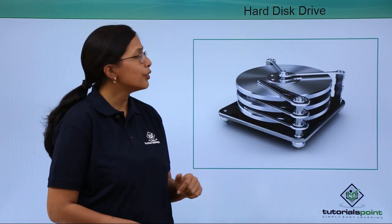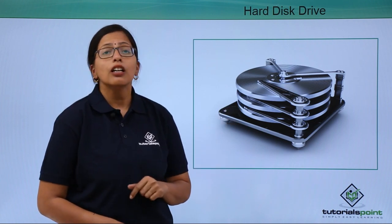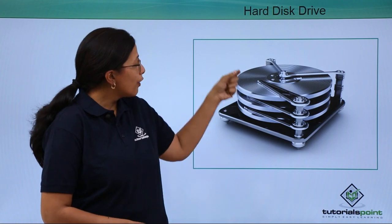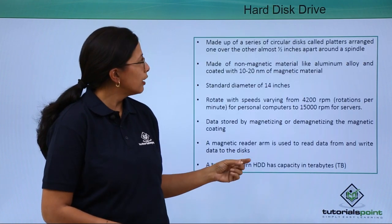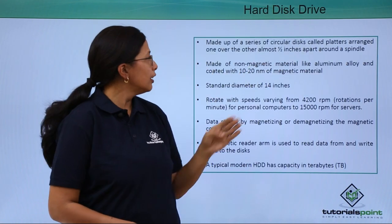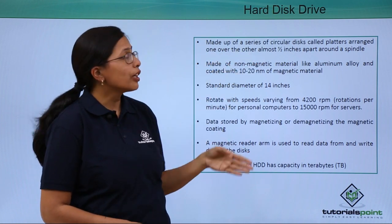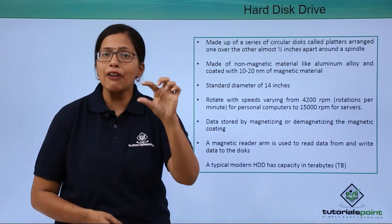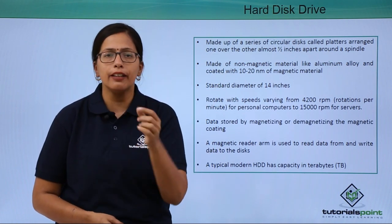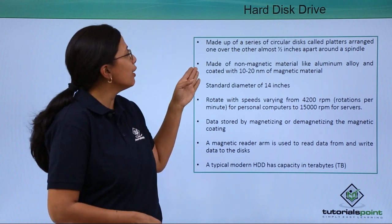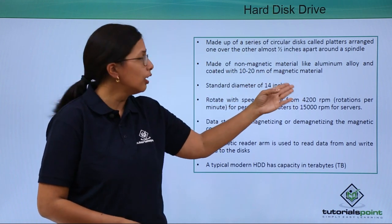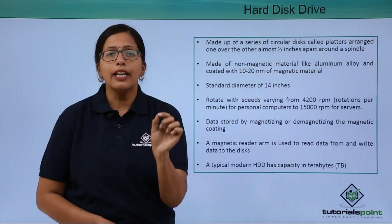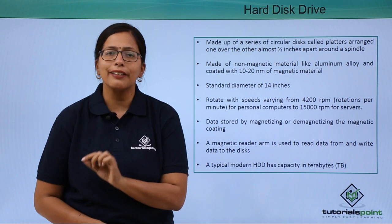This is a hard disk drive, as you can see. A hard disk drive is made of circular magnetic disks arranged around a spindle. It is made up of a series of circular disks called platters, which are arranged one over the other, half an inch apart, around a spindle — a central column. It is made of non-magnetic material like aluminum alloy or coated with aluminum, and a 10 to 20 nanometer layer of magnetic material.